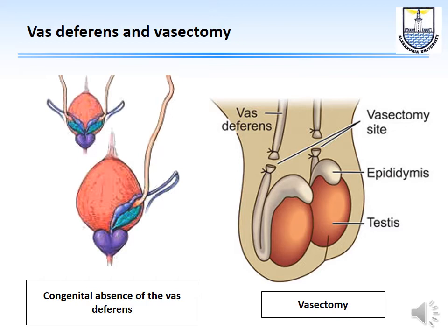Problems can also occur at the level of the vas deferens — for example, congenital absence. Usually both vasa deferentia must be absent to affect sperm production; if only one is missing, sperm formation can continue. Vasectomy is another cause: men who have had a vasectomy will have azoospermia and will not have sperm in their ejaculate.